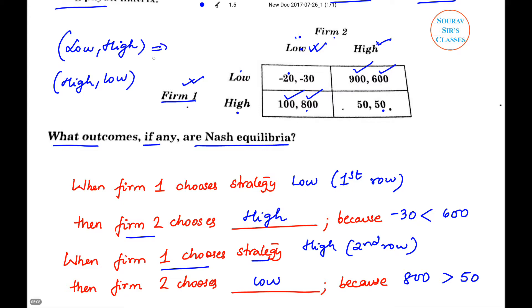With low-high, the payoffs of the players are given by 900 and 600. And with high-low, the payoffs of the players are given by 100 and 800.